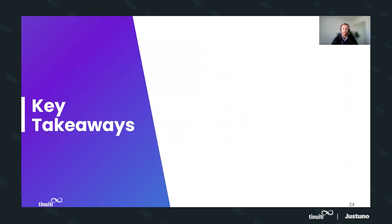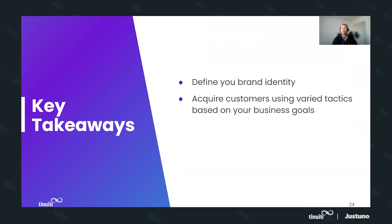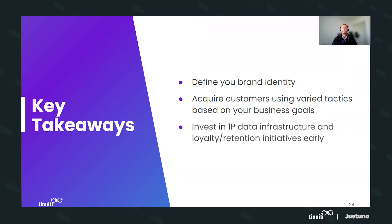Key takeaways: finding your brand identity — take a step back, look in the mirror, figure out who you are and who you want to be, because it informs everything else you'll be doing. Acquiring customers using varied tactics based on your business goals — we went over paid tactics and how to craft your channel mix strategy depending on whether you're in a growth phase or an ROI and efficiency phase. And finally, investing in a first-party data infrastructure and loyalty and retention initiatives early. You cannot do this early enough — it's never too early to start. Make sure everything is set up and working properly to help you retain customers. I'm Josh Briscoe, thank you all very much.